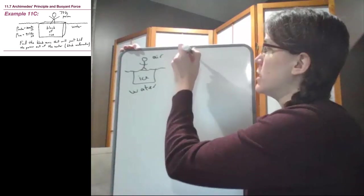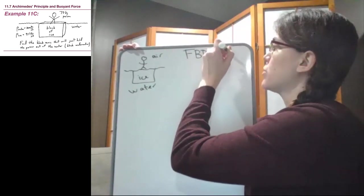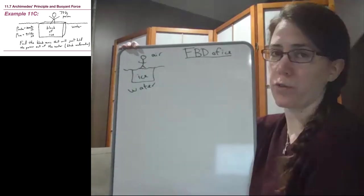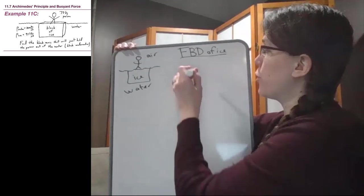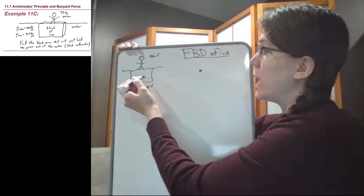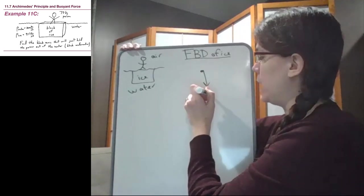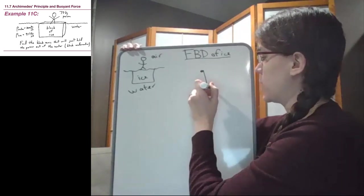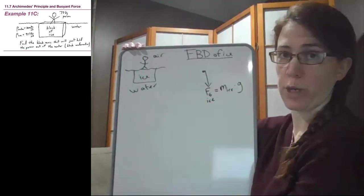So when we look at the forces, we're going to draw the free body diagram of the ice, because that's really the object that we want to focus on here. So when we look at the forces acting on this ice, we have the force of gravity of the ice itself, so the weight of the ice, which is the mass of ice times g, 9.8.